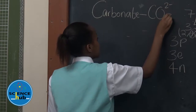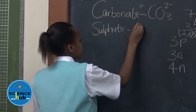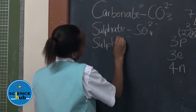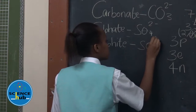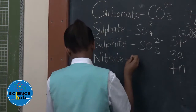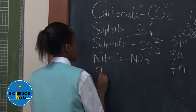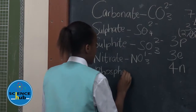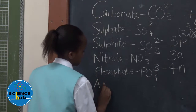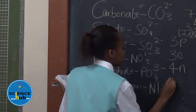The carbonate ion has a charge of 2 negative. The sulfate ion has the symbol SO₄ 2 negative. The sulfite ion has the symbol SO₃ 2 negative. The nitrate ion has the symbol NO₃ 1 negative. The phosphate ion has the symbol PO₄ 3 negative. And lastly, the ammonium ion with the symbol NH₄ 1 positive.